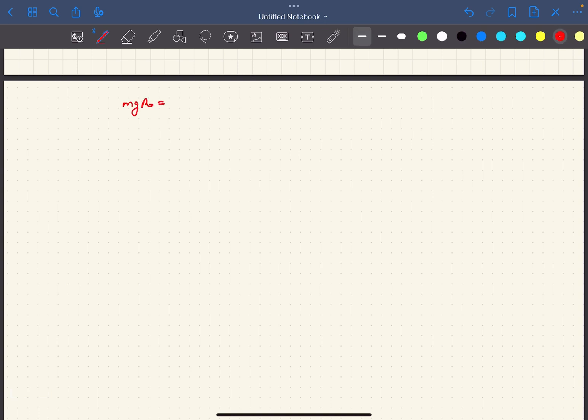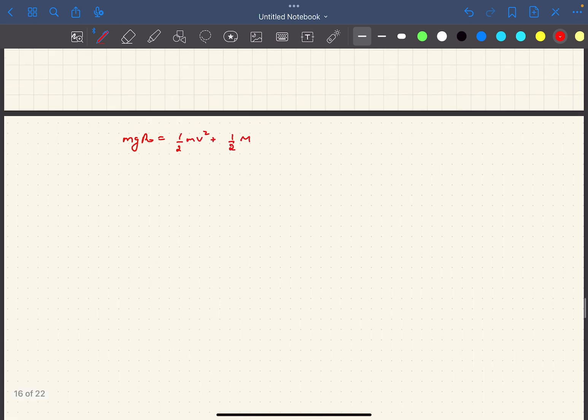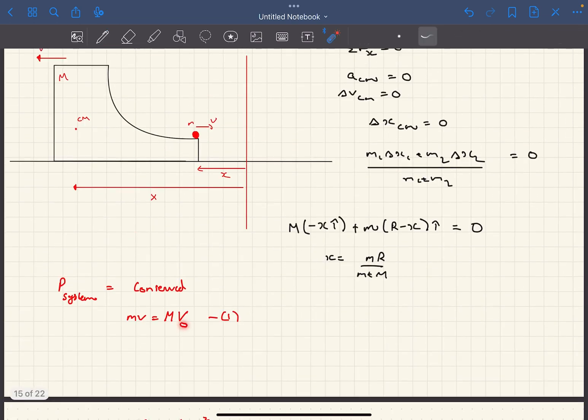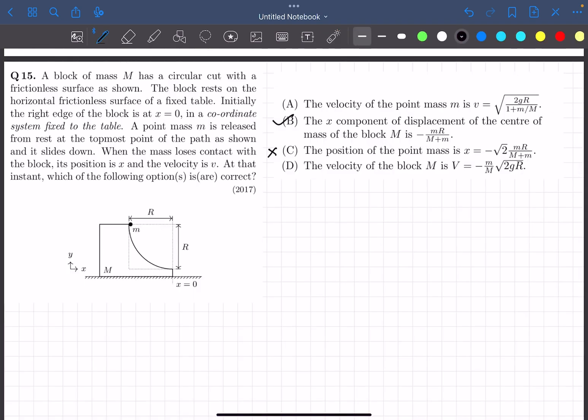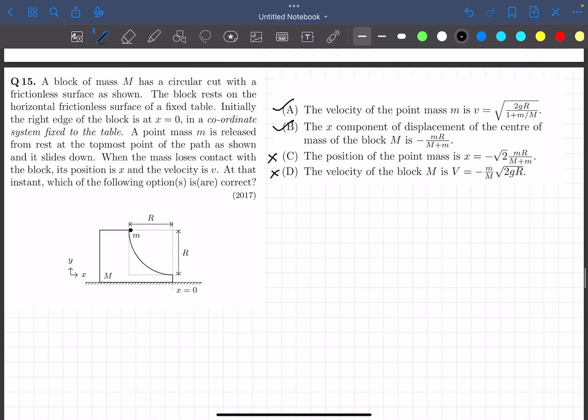Now capital V is going to be small mv divided by capital M. And after solving this, we'll get the velocity of the mass small m as this particular value which is given in option A. And option D will be wrong.